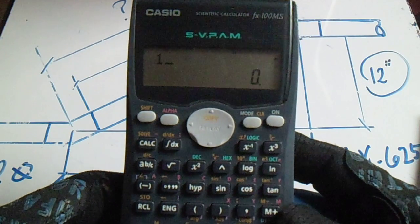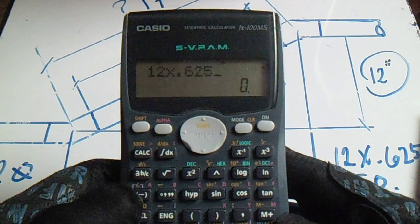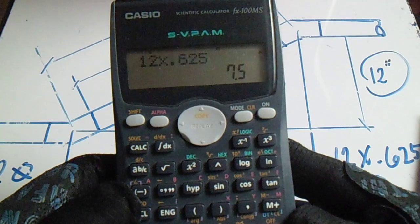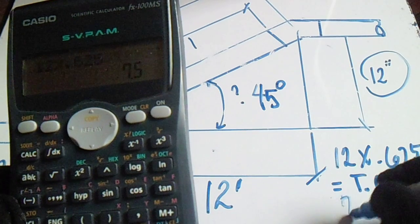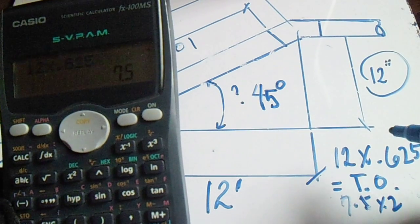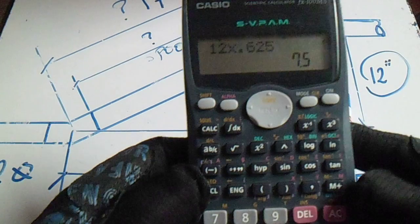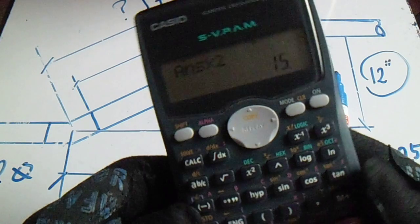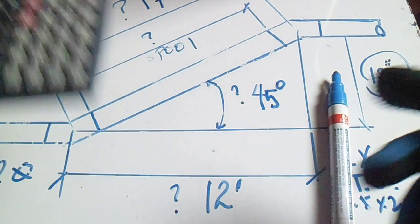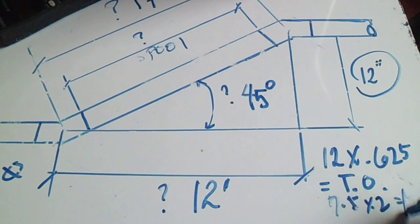12 multiply by 0.625, we have 7.5 - our takeoff. Multiply it by 2 because we have 2 elbows. So our takeoff is 15.